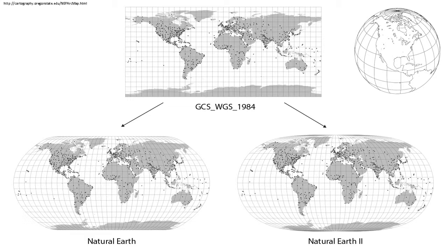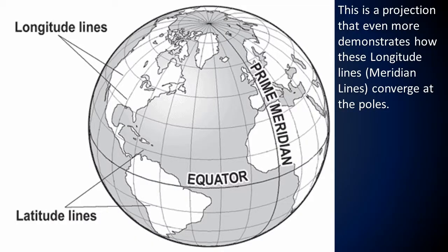This is because these maps are using a projection to place the three-dimensional Earth onto a two-dimensional map. These two versions at the bottom are also projections of the Earth, but they show how the longitudinal lines — meridians like the prime meridian — actually converge and come together at the poles. This is a projection that even more demonstrates how these longitude lines, the meridian lines, converge at the poles.